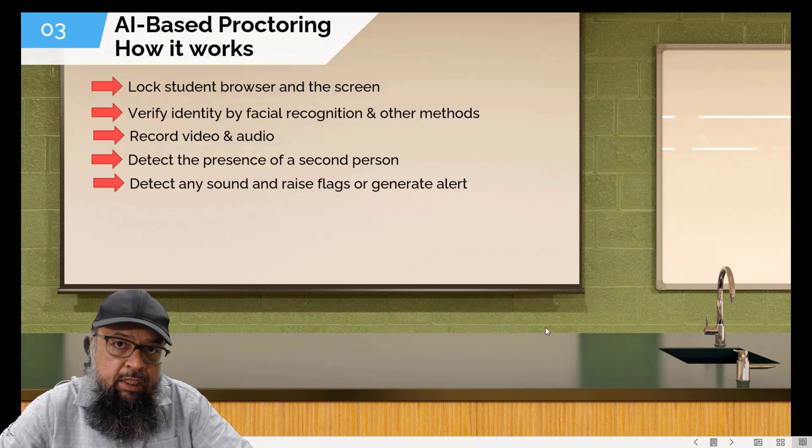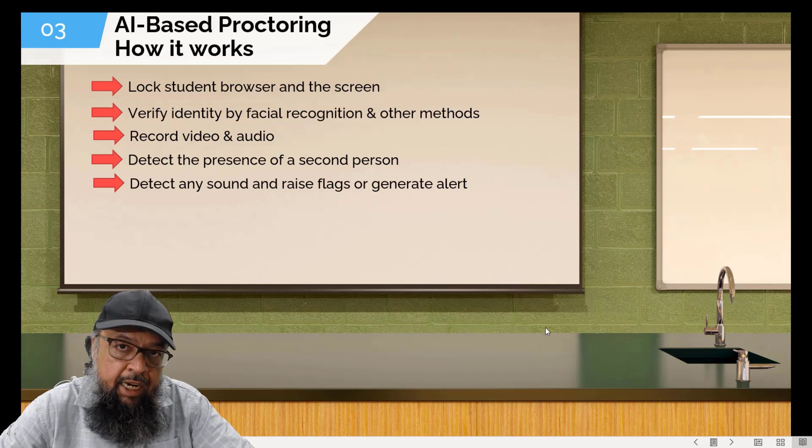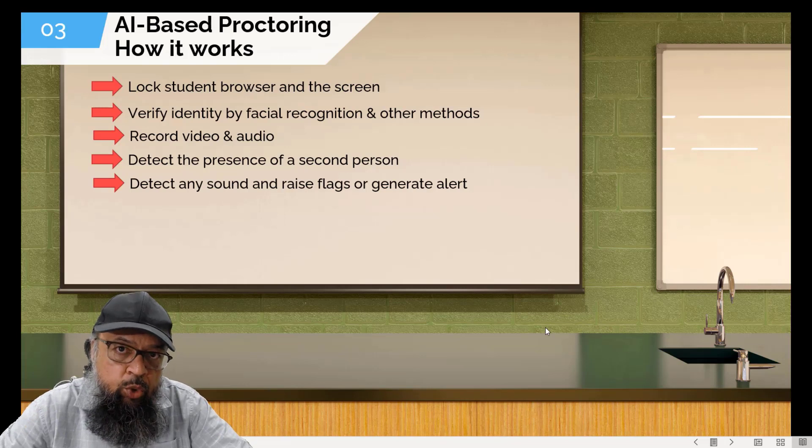And if there are some flags, what the human reviewer or the proctor will do is they will see the alert, they will note the time, and then they will see whether it was the test proctor who was giving instructions or it was some other sound. And this is the time where students also want to talk to someone when they are getting some instructions. So you have to review it and decide whether students were also talking to someone else at the same time or not.